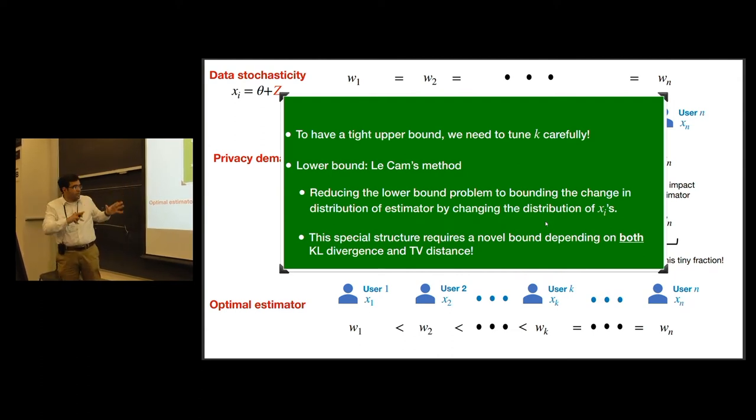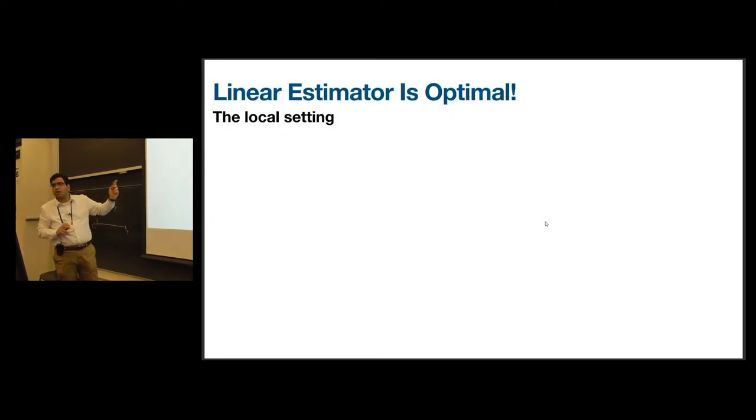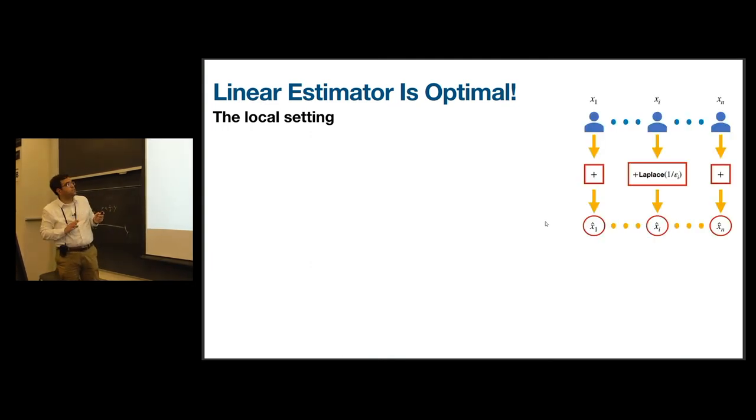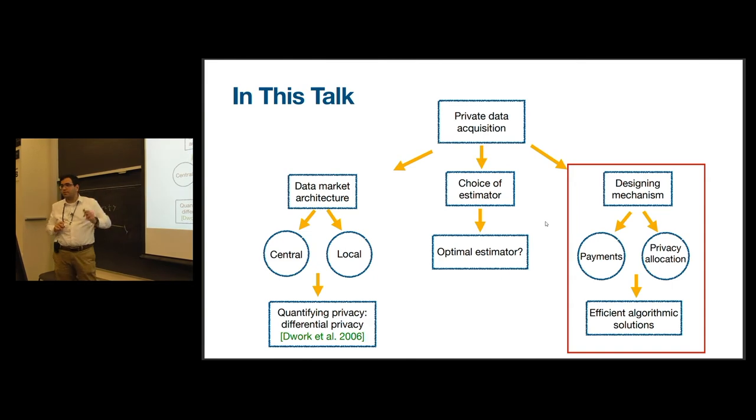Of course, I'm not going to go into the details due to the interest of time, but what I want to highlight is that if these epsilon i's were all equal, we didn't have any of these challenges. Because even for privacy demand, we just need to put all the weights equal. But here, even using each of these two divergences will lead to suboptimality. I'm going to stop on the sketch of the proof here. We have a similar result on the optimality of linear estimator for the local case, which I'm going to skip due to interest of time, and I'm going to go to the last part of the talk, designing a mechanism.